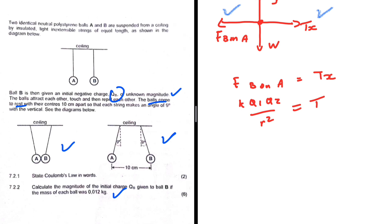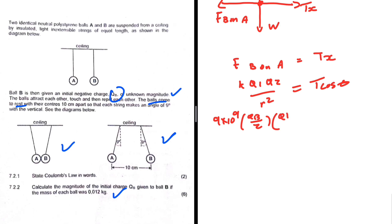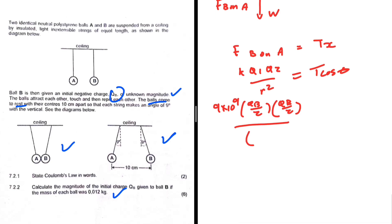Substituting values: k is 9×10⁹, q1 is qb/2 (the charge on A after touching), q2 is also qb/2 (the charge on B after touching), and the distance between them is 10 centimeters, which is 0.1 meters. So we have 9×10⁹ · (qb/2) · (qb/2) / (0.1)² = t·cos(θ).